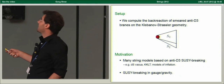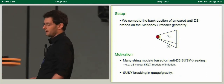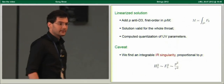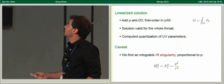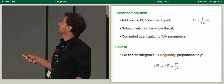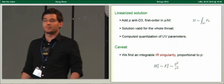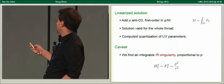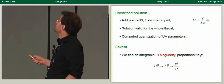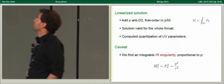The non-compact setup I will consider is also interesting to study SUSY breaking in holography. We first find a linearized solution. We add P anti-D3 branes and treat them as a first-order perturbation of the Klebanov-Strassler geometry in an expansion in the parameter P over M, where M are the units of the Ramond-Ramond three-form flux over the S3 of the conifold.